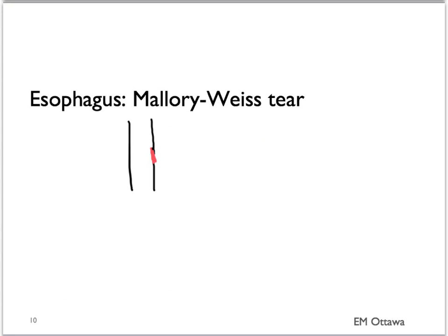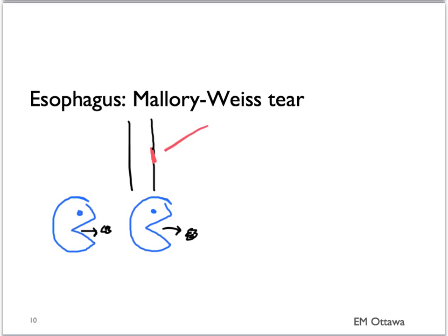It can also be from a Mallory-Weiss tear. A Mallory-Weiss tear occurs after repeated episodes of vomiting. During the repeated episodes of vomiting, a small tear can happen along the esophagus. As a result, the vomit can be streaked with blood. As with esophagitis, blood from a Mallory-Weiss tear tends to be in small quantity.